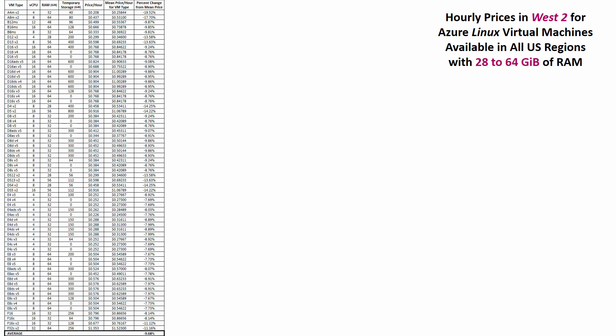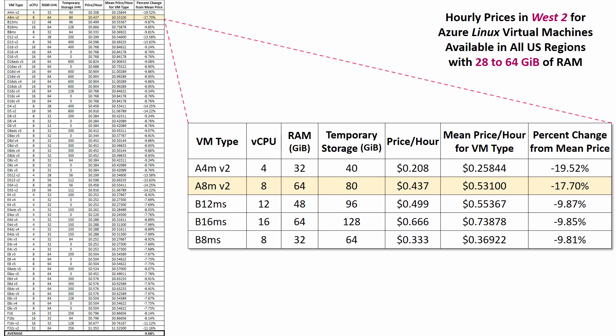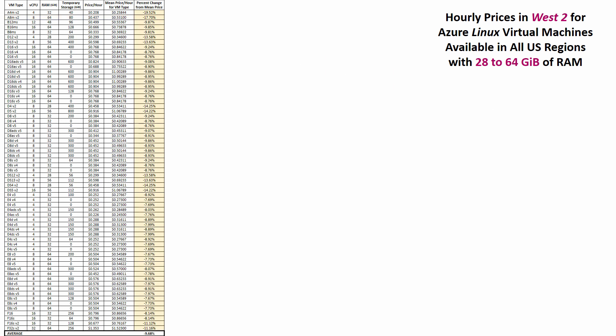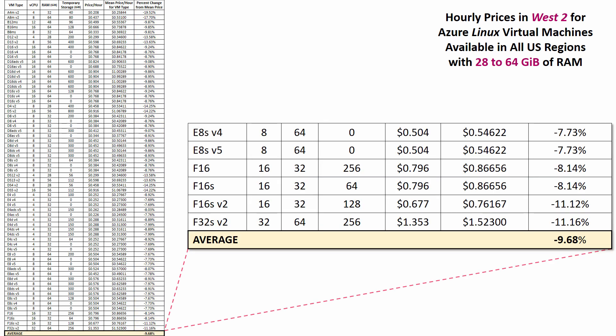Now I'll describe the main metric I used to find a pricing pattern. Here's a long list of the 65 Linux VM types in the second group, along with their prices from only the West 2 region. When I zoom in, you can see a row for the A8M V2 that I mentioned earlier. And in its last column, you can see West 2's 17.7% decrease from the mean of all the A8M V2 prices in the nine US regions. When I calculated the average of all 65 numbers in the last column, I found that across all VM types in the second group, West 2 averages nearly a 10% decrease in price from the means.